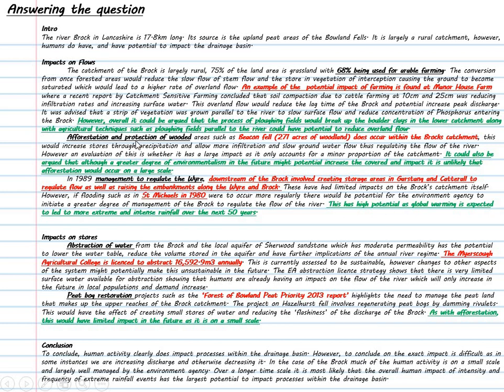Into my second point about afforestation: talking about Beacon Fell, a specific area in the River Brock's catchment, talking about the relationship between woodland areas and infiltration and stem flow as key AO1 processes. The green section again, this is my evaluation: It could also be argued that although a great degree of environmentalism in the future might potentially increase the coverage and impact, it is unlikely that afforestation would occur on a large scale. So in this I'm trying to make the point that although afforestation can have an impact in the Brock's basin, in terms of proportional area at the moment it's very small, and I don't see that changing largely in the future as the land is largely used for farming and it's unlikely to be turned over to just large woodland and forested areas.